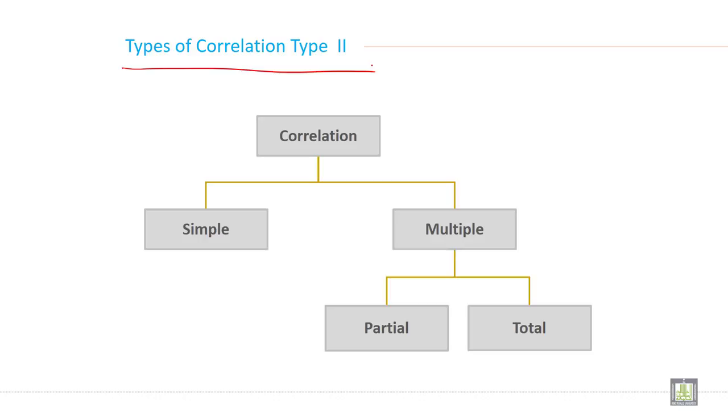Correlation again divided into two types: simple correlation and multiple correlation. Multiple correlation have two types: partial and total. We will discuss one by one in the next slide.